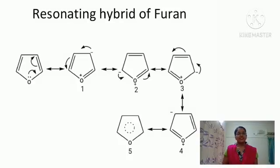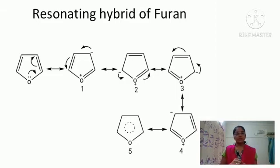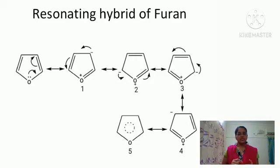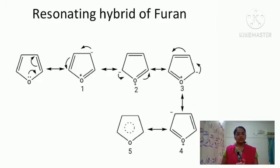Before going to the electrophilic substitution reactions of furan, we need to understand the resonating structures of furan. The oxygen in furan has a lone pair of electrons. This lone pair starts to donate and shifts, forming a double bond between carbon and oxygen, so oxygen becomes positively charged and negative charge enters at the third position of the furan ring — that is the first resonating structure.